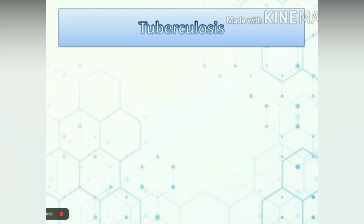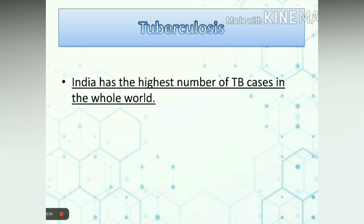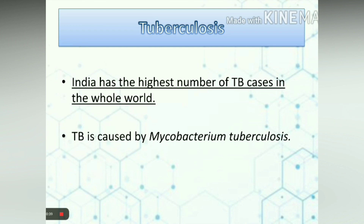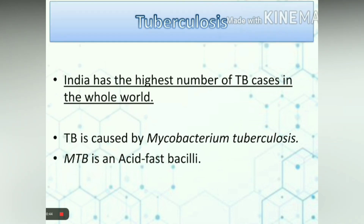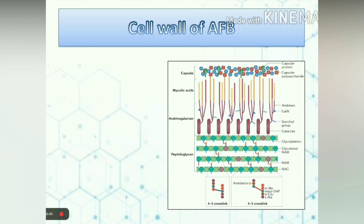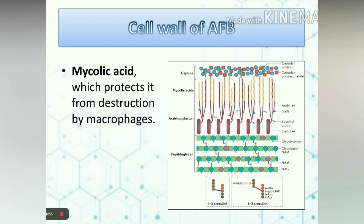Why is it important for us to learn about TB? Because India has the highest number of TB cases in the whole world. Tuberculosis is caused by Mycobacterium tuberculosis, which is an acid-fast bacillus. The cell wall of acid-fast bacilli consists of several structures, out of which Arabinogalactan and mycolic acid are important to us. Mycolic acid protects the bacteria from destruction by macrophages. Therefore, drugs which inhibit mycolic acid or Arabinogalactan synthesis will disrupt the cell wall and kill the bacteria.